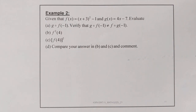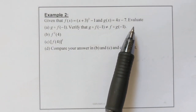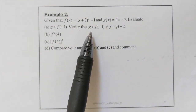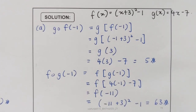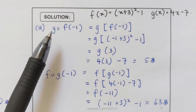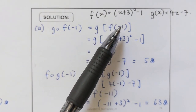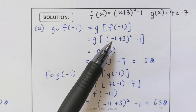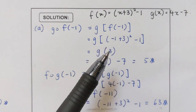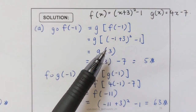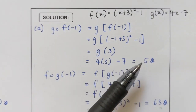Example 2. Given that f(x) equals (x plus 3) squared minus 1 and g(x) equals 4x minus 7, we need to evaluate g(f(−1)) and verify that g(f(−1)) is not equal to f(g(−1)). So we will look at the answer. We need to find first g(f(−1)). We have g(f(−1)), and first we substitute −1 into our function f: it will be (−1 plus 3) squared minus 1. We simplify in the bracket first, we get 3, and now we substitute 3 into our function g: 4 times 3 minus 7. So we get 5.